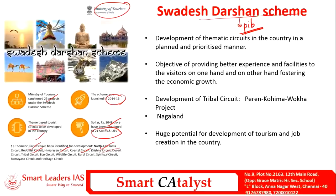The development of these thematic circuits in a planned and prioritized manner is essential to deliver their fullest potential. This scheme has huge potential for job creation in the country and to engage the youth of the region. The latest news is the development of a tribal circuit in the state of Nagaland, wherein the Peren-Kohima-Oka project has been sanctioned, which will also result in increasing cleanliness and ecological sustainability over the region.